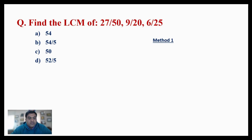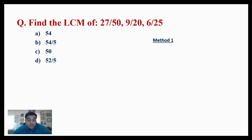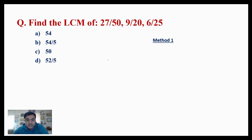We have to find the LCM of numbers which are given in fraction form. LCM means least common multiple, which we can find easily when the numbers are natural numbers. The twist here is when the question is in fraction form. We'll take you through the process of how to find the LCM of three, four, or more numbers given as fractions, using various methods.